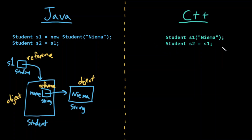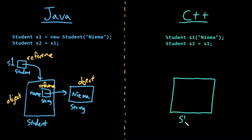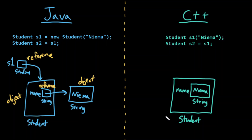In C++, however, let's run what seems to be equivalent code, but turns out to do something much different. Looking at that first line: I'm creating a new student object, and within it I have an instance variable which is an object of type string storing the name Nima. So this is a student object, and this is a string object — and this student object is called S1.